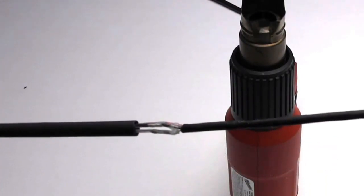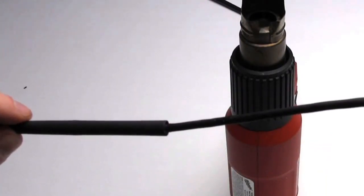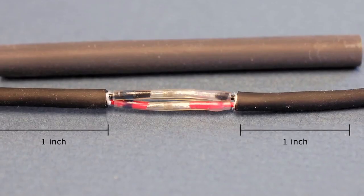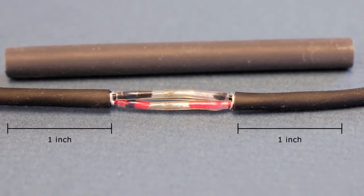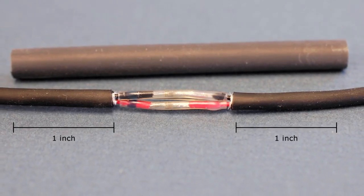For step 6, slide the polyolefin adhesive lined heat shrink over the junction of the wires. This will seal the splice from the elements. Allow an extra one inch of coverage by the heat shrink on the outer jacket of cable to ensure a good seal.